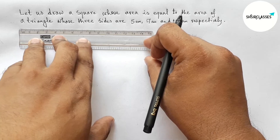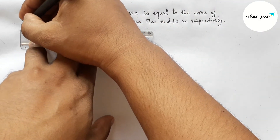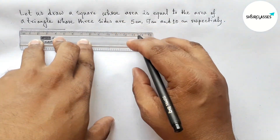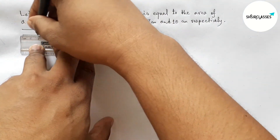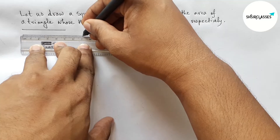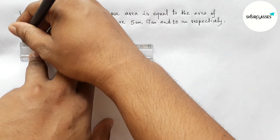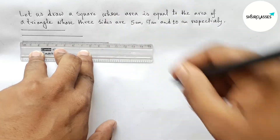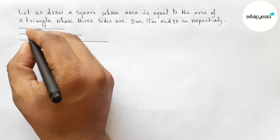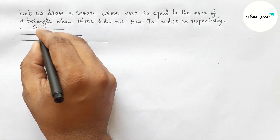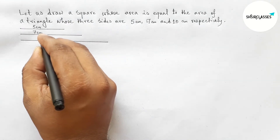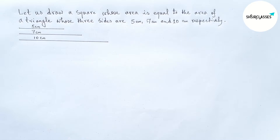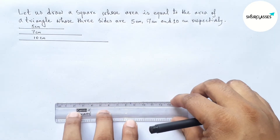First of all, let us draw the given three sides of the triangle. Drawing a line segment of length five centimeter, then drawing the second side of length seven centimeter, and then drawing the third side of length ten centimeter. So this one is five centimeter, this one seven centimeter, and this one ten centimeter.